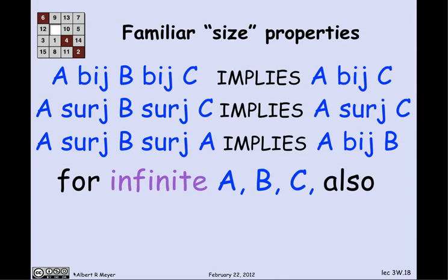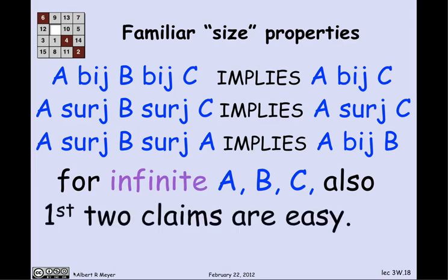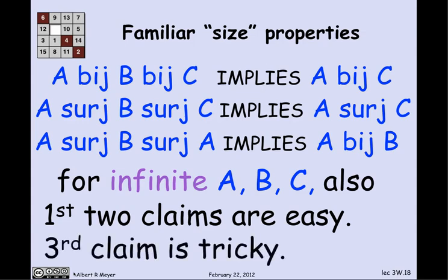The first two claims go through easily for infinite sets. If there's a bijection from A to B and one from B to C, you find a bijection from A to C simply by composing them — the composition of bijections is a bijection. Likewise, the composition of surjections is a surjection, proving the second claim easily. But the third claim — that if A surge B and B surge A then A bige B — is much more interesting and not obvious. It's called the Schroeder-Bernstein theorem, and it will come up in a few more lectures.